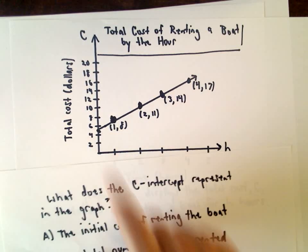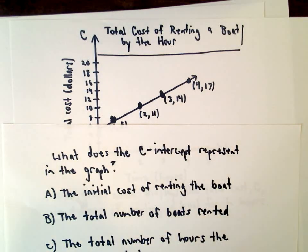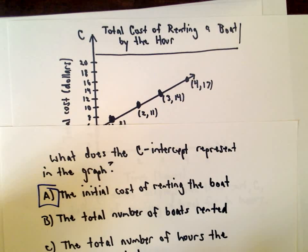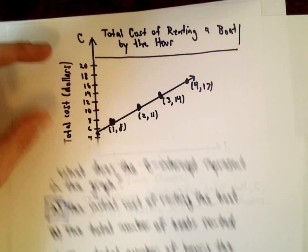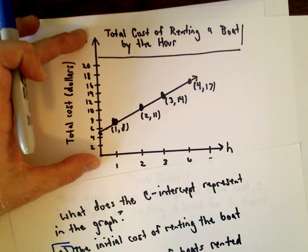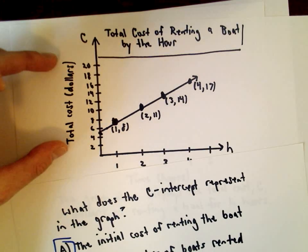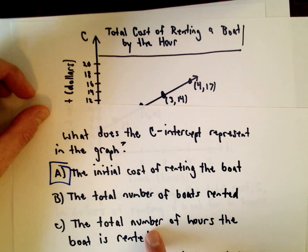So the idea is the initial cost is going to be five dollars. Answer choice A is clearly correct here. It's the initial cost of renting the boat. It's not the total number of boats rented. The vertical axis has nothing to do with the number of boats. It tells you the cost.